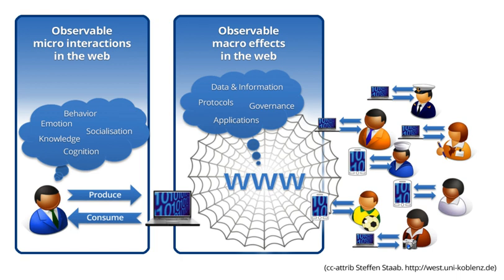Web science is processing the information available on the web in similar terms to those applied to the natural environment. The Web Science Institute describes web science as focusing the analytical power of researchers from disciplines as diverse as mathematics, sociology, economics, psychology, law, and computer science to understand and explain the web. It is necessarily interdisciplinary, as much about social and organizational behavior as it is about the underpinning technology.